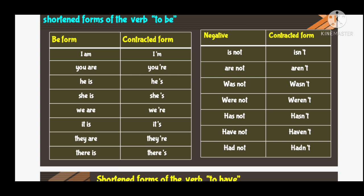Let us have a look at this table and see how the forms change. In the table we have the base forms as well as contracted forms. The first form: 'I am' is a base form. Its contracted form is 'I apostrophe m' — that means 'I'm'. It is first person.